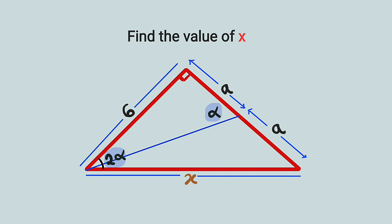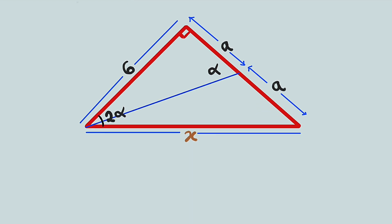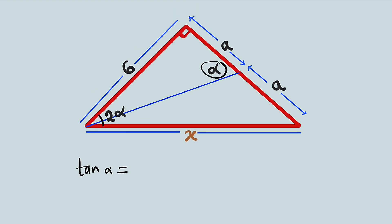Let us take the tangent ratio of both angles. For the smaller right angle triangle, if we take the tangent of alpha, we have tan(alpha) = opposite divided by adjacent. The opposite of that angle is 6 and the adjacent is A, so tan(alpha) = 6 over A.